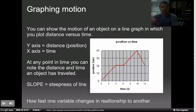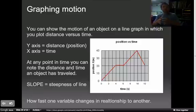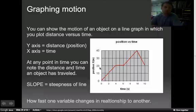The next thing is graphing. So when we take a look at graphing, you can show the motion of an object using a line graph. What you need to do to do that is you'll need to have a y-axis and an x-axis. The y-axis will have your distance, your x-axis will have your time because that's what you control. My independent variable, what I control, always goes on the x-axis. That's the time. So at any point in time, you can note the distance and the time an object has traveled.